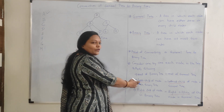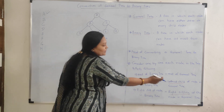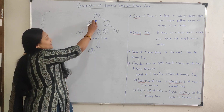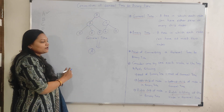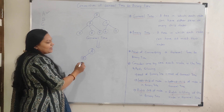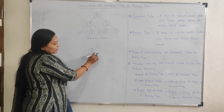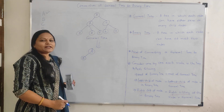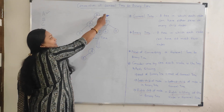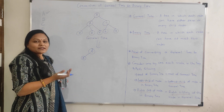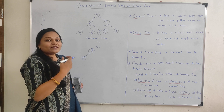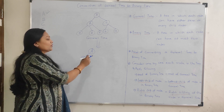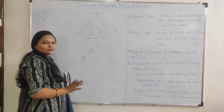To find the left child of A, we consider the leftmost element in the general tree, which is B. So B is the left child of A in the binary tree. To find the right child of A, we consider the right sibling of A. But A is the root node and has no right sibling, so A has no right child in the binary tree.